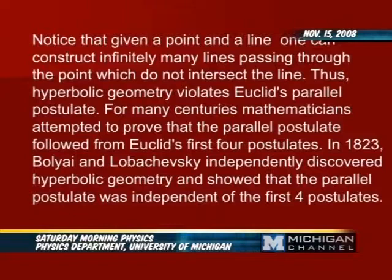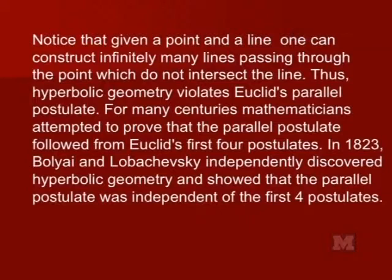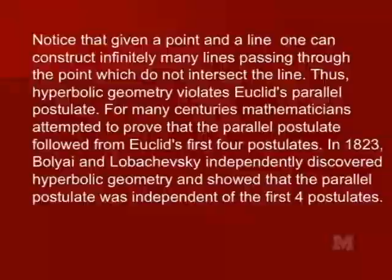This was actually what home mathematicians in the 18th century attempted to prove — that the parallel postulate, if you give a point and a line there's a unique parallel line passing through that point, followed from the first four of Euclid's axioms. That's actually what Lewis Carroll spent most of his time doing when he wasn't writing through the looking glass. Early in the 19th century, both Janos Bolyai and Lobachevsky independently discovered hyperbolic geometry and showed that the parallel postulate failed.